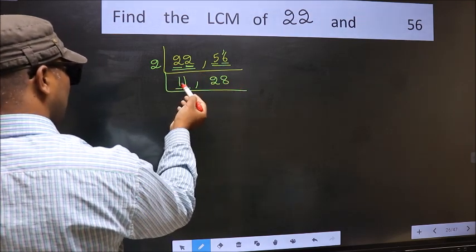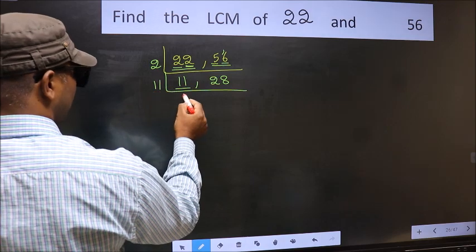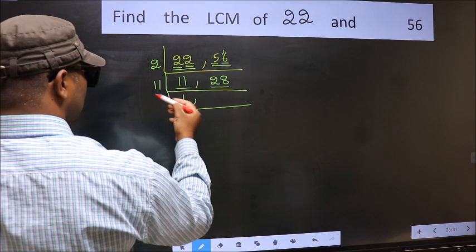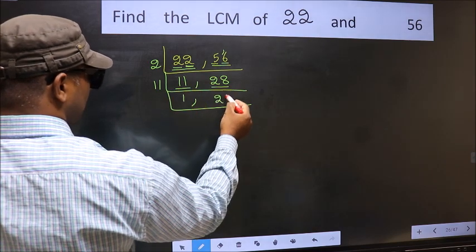Now here we have 11. 11 is a prime number, so 11 times 1 is 11. The other number 28, non-divisible by 11, so we write it down as it is.